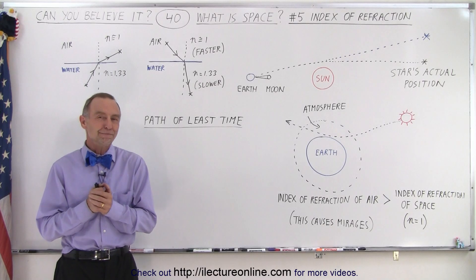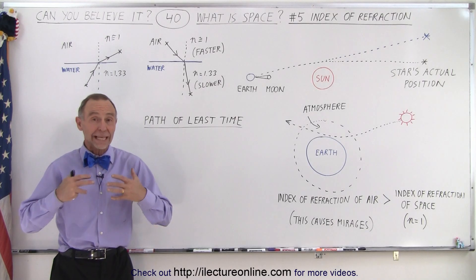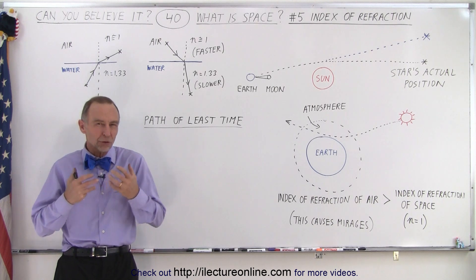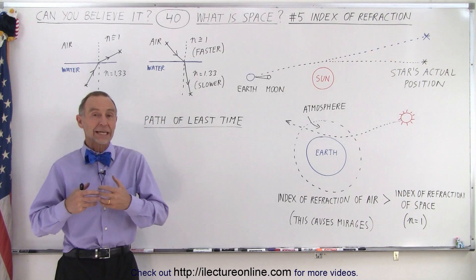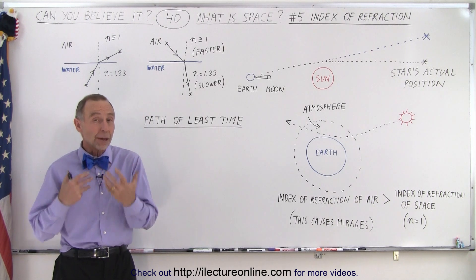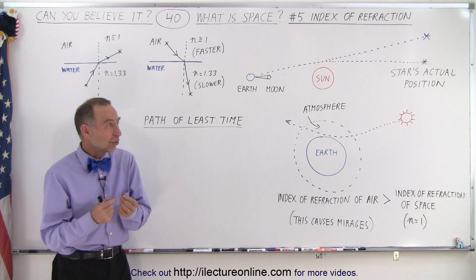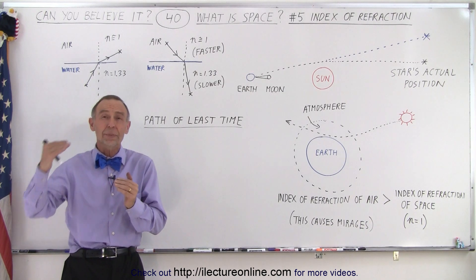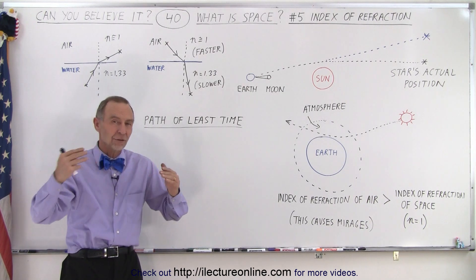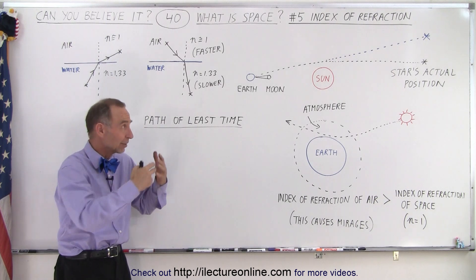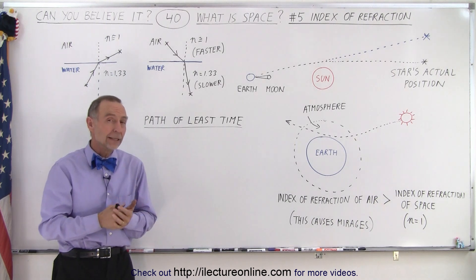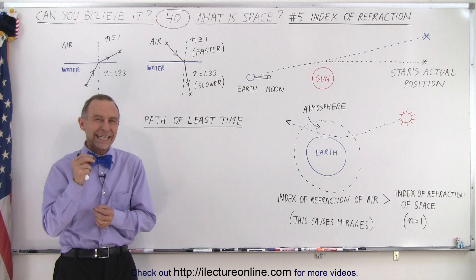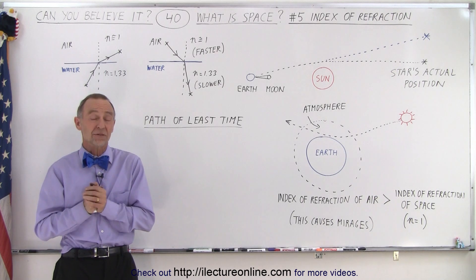Welcome to our lecture online. Here again we're taking another look at what space is, and we're going to try to figure it out by looking at the various properties of space. In this case we're going to look at how light bends through space as it approaches a large object like the sun, but now we're going to take a look at it in terms of the index of refraction of space.